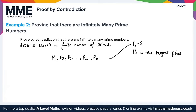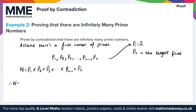Now let's consider the product of all these primes. Let N equal the product of all primes: P1 times P2 times P3, continuing all the way up to Pn. Note that N is a multiple of every prime number in the list. Now let's consider what happens if we add 1 to N — we get N+1, which equals P1 × P2 × P3 × ... × Pn + 1.